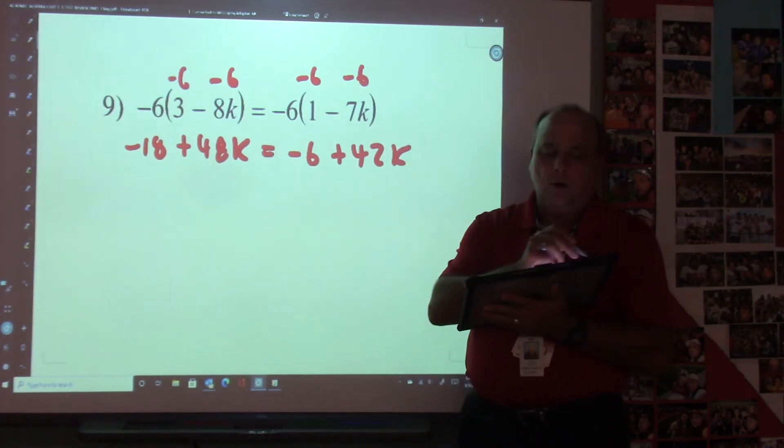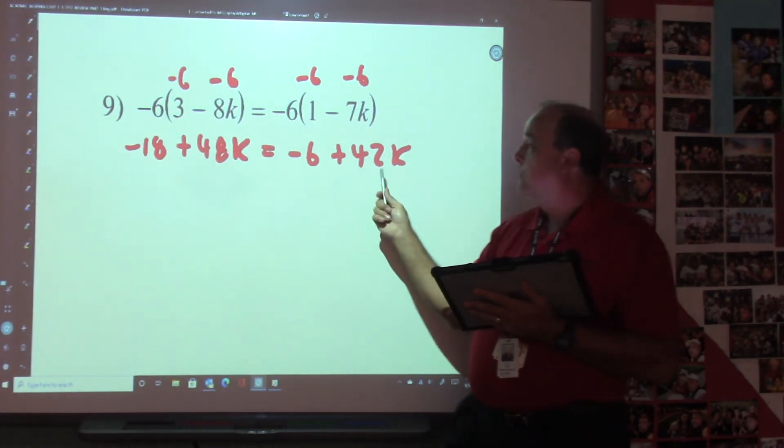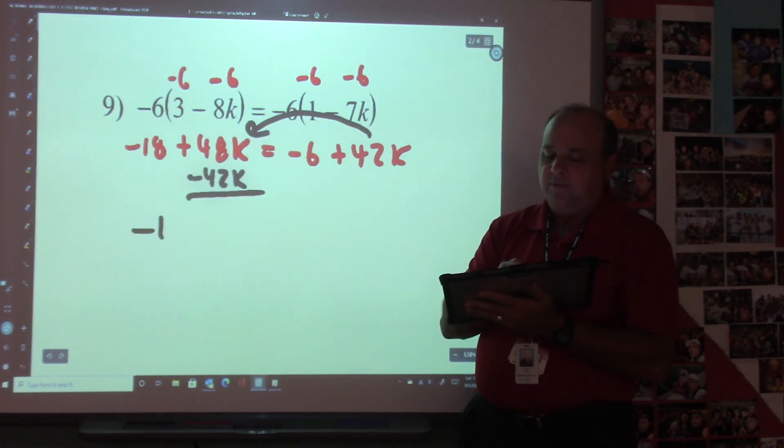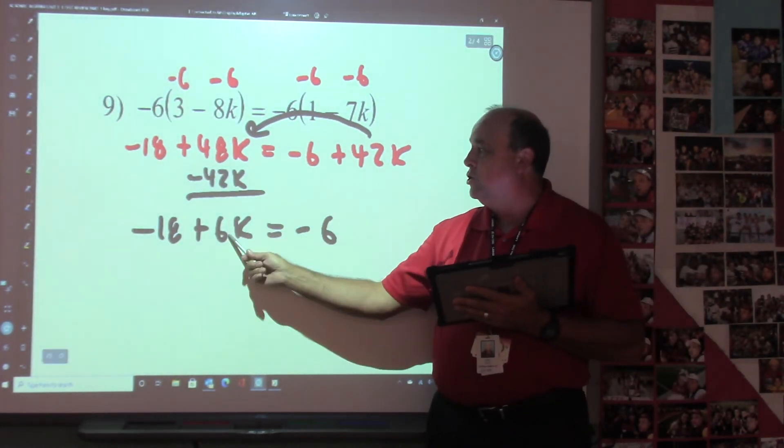So we're right here. Now then, what's our smallest letter? Our smallest letter is the 42. So I'm going to take the 42 and move it across, and I'm going to get -18 + 6k = -6. 48 - 42 is 6.